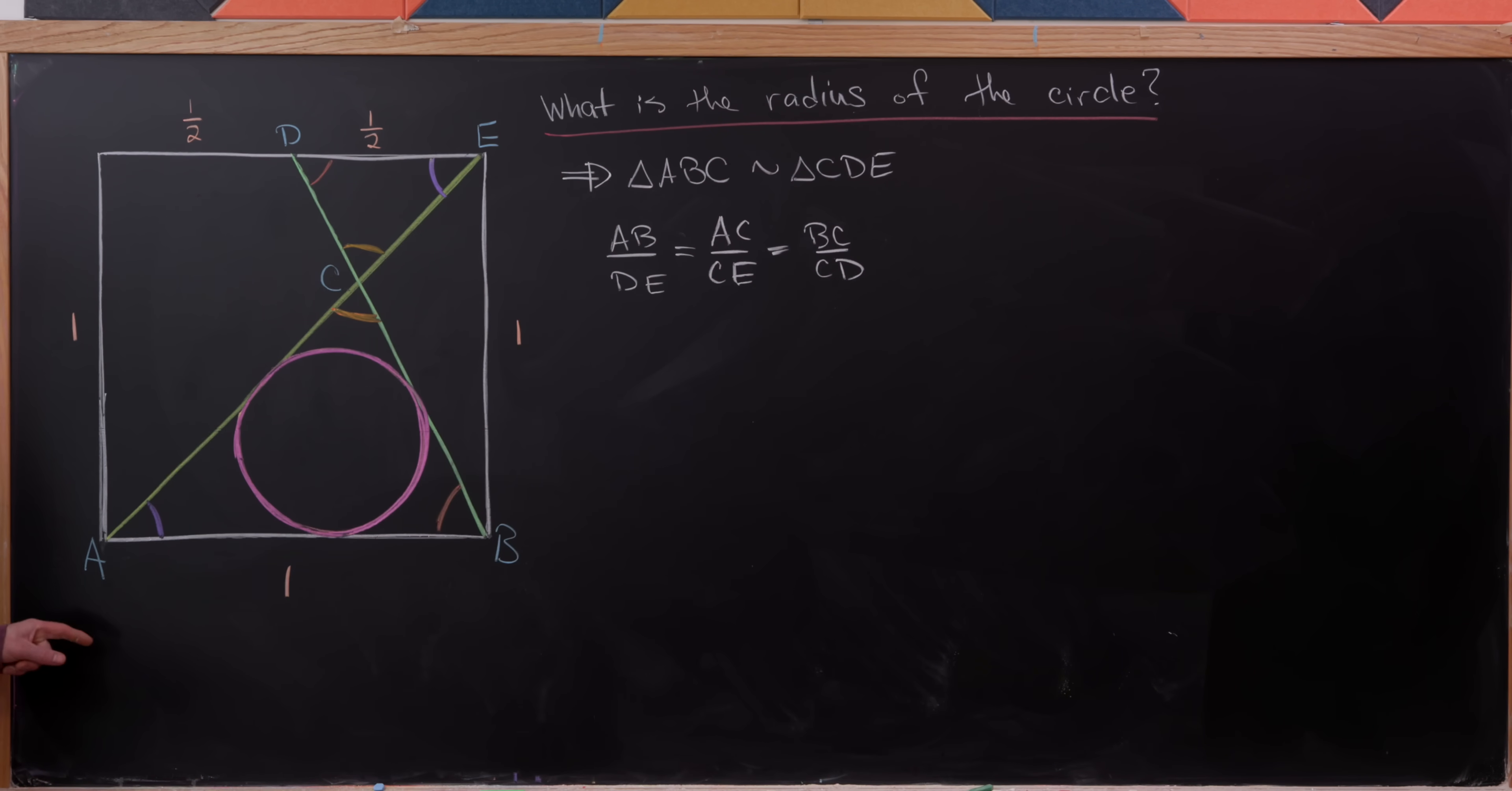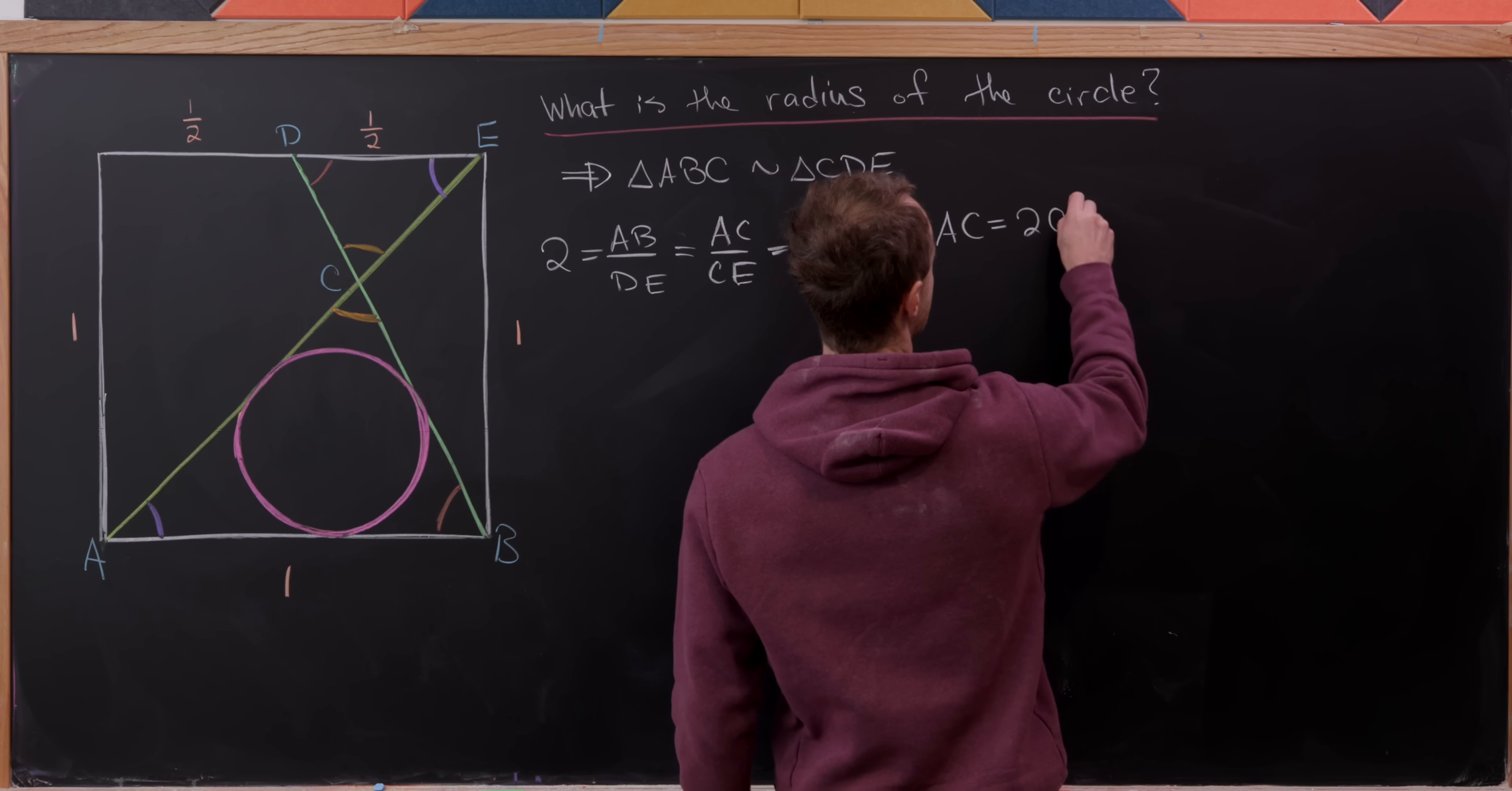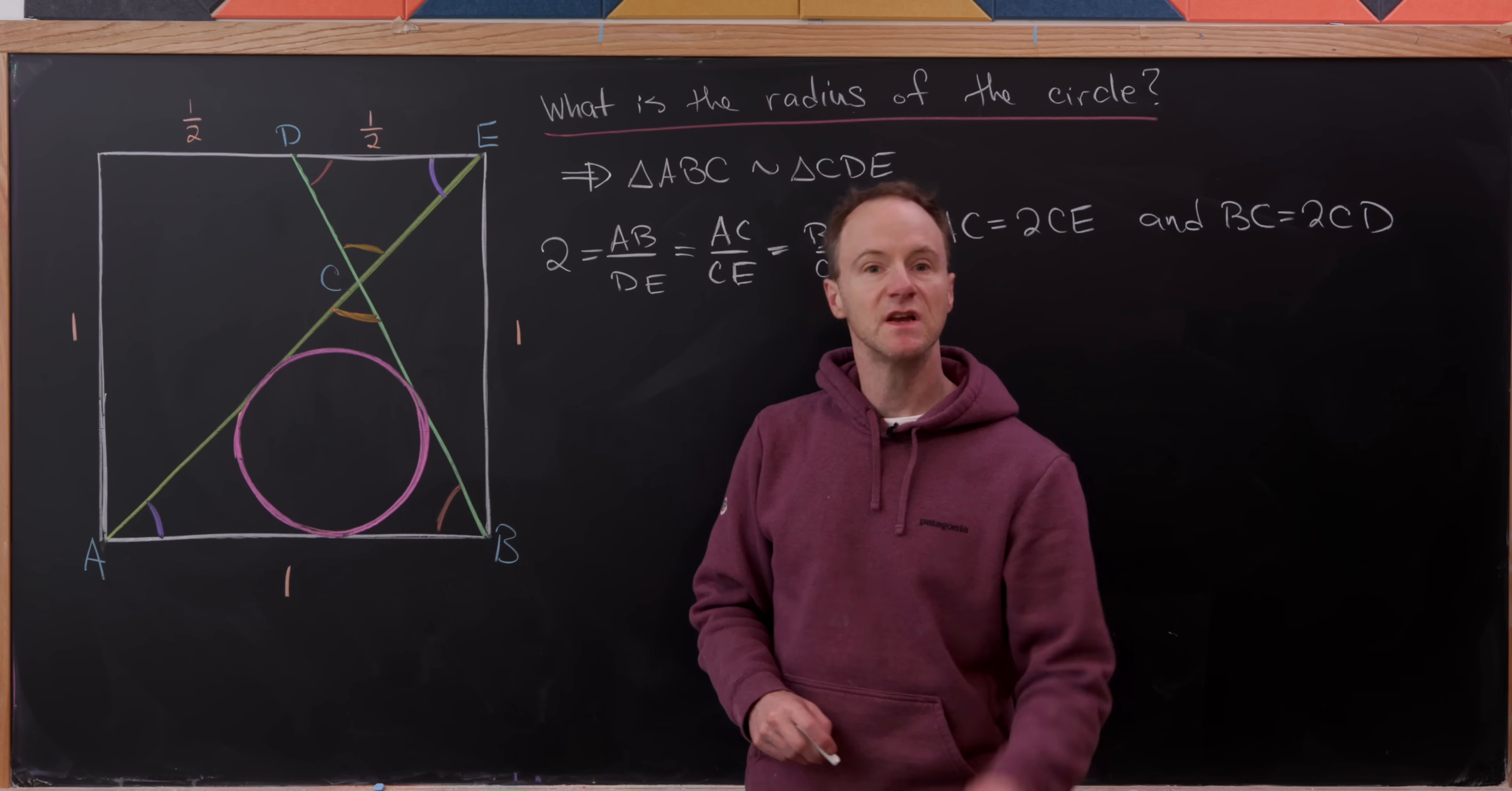But now let's observe that we know one of these measures or we know two of these measures. So AB over DE is one over one half. In other words, it's equal to two. So that tells us that for instance, the length of AC is equal to two times the length of CE and the length of BC is equal to twice the length of CD.